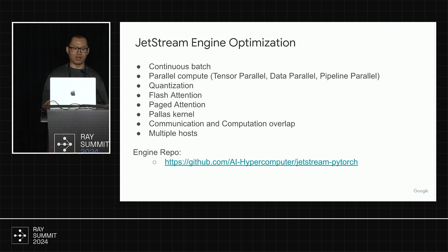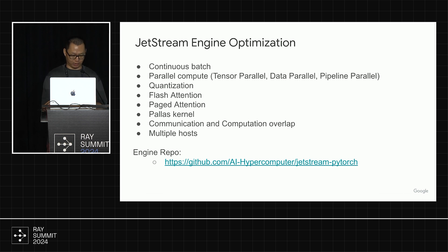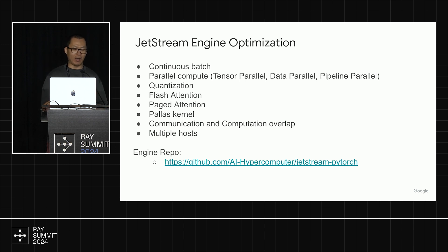We right now have int4 and int8 quantization. Another two are about attention kernels — we have flash attention and paged attention. And if the user or our engineer wants block-wise compute, we do have the Pallas kernel. Another optimization is we do a lot of communication and compute overlap, like how we can push from HBM to CPU DRAM, and how we can overlap communication from N-block to N+1-block. And another one is how we scale to multiple hosts — I'll talk more on multiple host in the next slide.